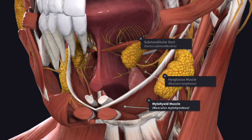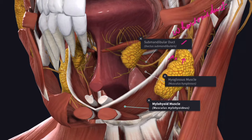The submandibular duct is also known as Wharton's duct. It is about 5 centimeters long and begins from the middle of the deep surface of the superficial part of the gland, a little behind the posterior border of the mylohyoid muscle. The duct first passes upwards and backwards about 4 to 5 millimeters, then runs forwards and upwards through the deep part of the gland between the mylohyoid muscle and the hyoglossus muscle, and thereafter between the sublingual gland and the genioglossus muscle, finally opening into the floor of the mouth at the sublingual papilla on each side of the frenulum linguae.